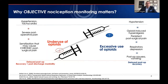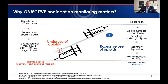On the right, we have the consequences of overdosing opioids — the most serious being respiratory depression, as well as hypotension, opioid-induced hyperalgesia, and other side effects including nausea, vomiting, ileus, urinary retention, and pruritus. These patients may also have prolonged PACU stays.